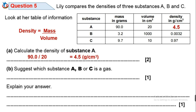Question 5B: Suggest which substance — A, B, or C — is a gas, and explain your answer. Substance A has a density of 4.5 g/cm³, substance B has a density of 0.0032 g/cm³, and substance C has a density of 0.97 g/cm³. The substance with the lowest density is substance B. Therefore substance B is a gas, because it has the lowest density.